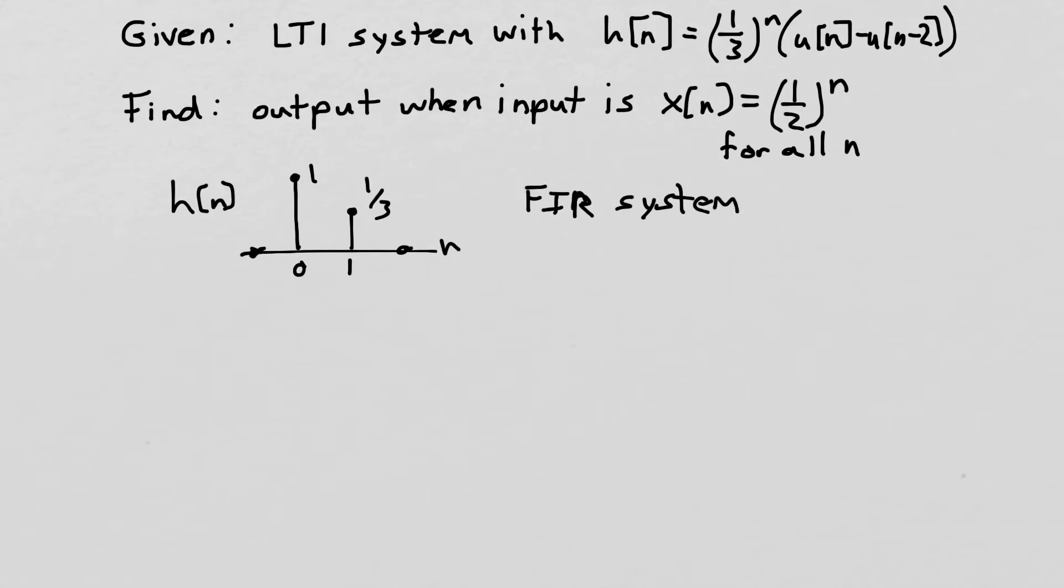And so we can immediately associate the values of the impulse response here with the coefficients of a difference equation. So we can easily say that this system is represented by a difference equation that looks like x of n plus 1 third x of n minus 1. And if we go ahead and just plug back into this to compute the impulse response of this system, remember the impulse response is the output of the system. When the input is delta of n, we would get delta of n plus 1 third delta of n minus 1, and that's exactly this h of n function that we got here.